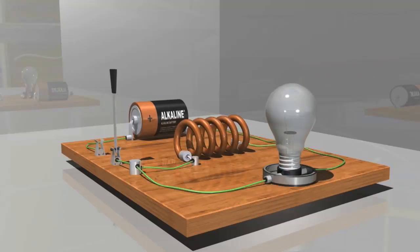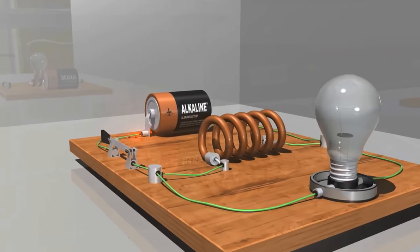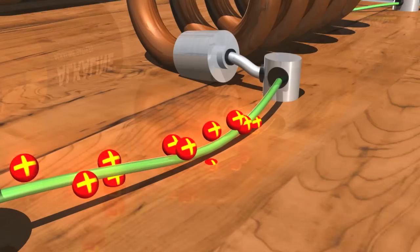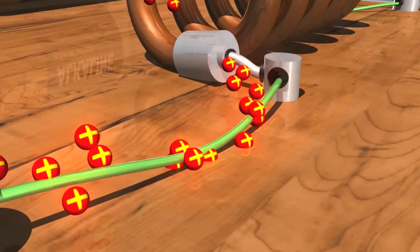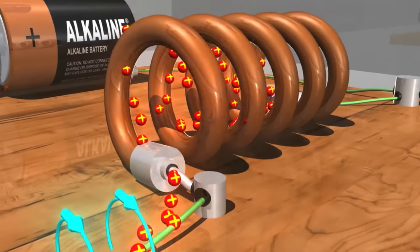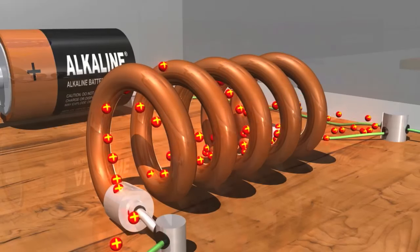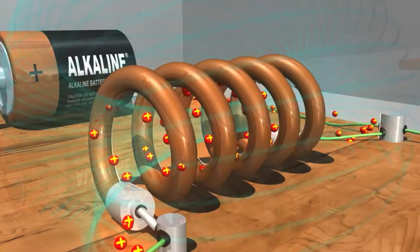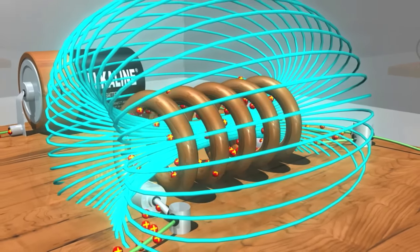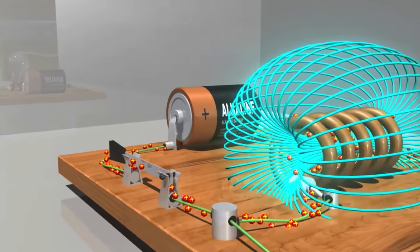When we power this circuit, the electrons in the current create a magnetic field around the wire as they move through it, as shown by these blue arrows. If the wire is formed into a coil like this inductor, the magnetic field lines converge in the center. They gradually build up to a maximum magnetic field that is much stronger than the one around the straight length of the wire.